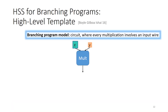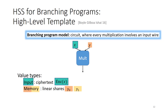So we want to build HSS for branching programs. The model of branching programs we consider is very simple — you can think of it as arithmetic circuits with addition and multiplication gates, with the constraint that in every multiplication gate at least one of the inputs is actually an input wire to the circuit itself. We can consider two types of values: input wires to the circuit, and intermediate computation values which we'll call memory values. In the HSS construction, every input wire is given to the parties in an encrypted form under some additively homomorphic encryption scheme, and for each memory value the parties will have a secret sharing of the corresponding message under some linear secret sharing scheme.